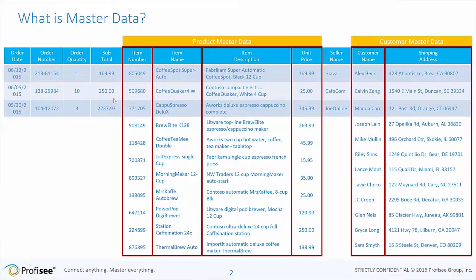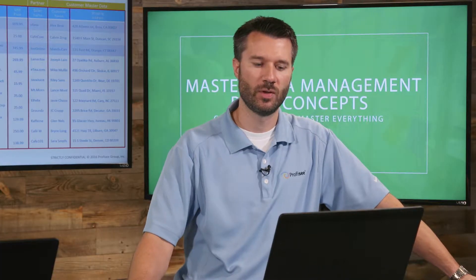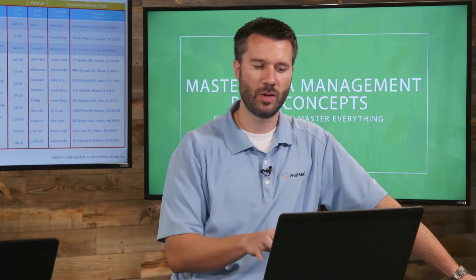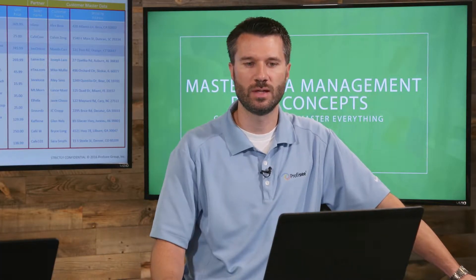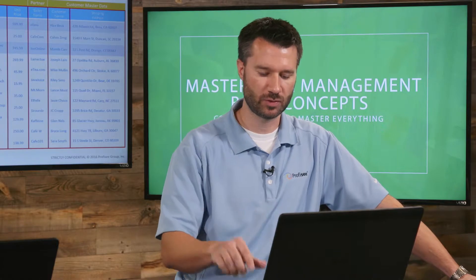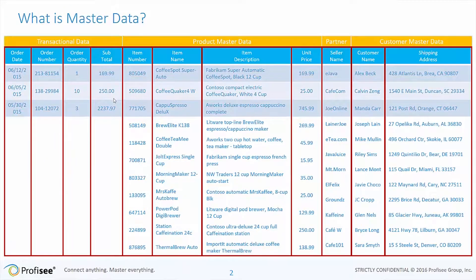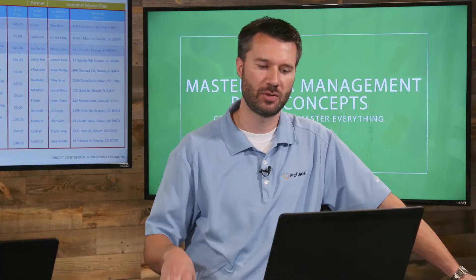We also have customer data — the customer names and the address we ship to — that's all an example of master data. And then we also have the seller name, which might be an example of a partner or distributor as well. So those are three examples of master data you can see embedded within these transactions, and then we have separately the actual transactional data. There's a distinction we like to draw between transactional data and master data.